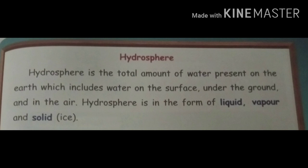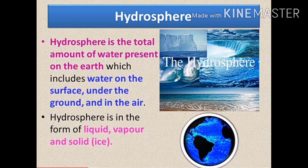What are the different forms available? Water on the surface, water under the ground, and water in the air. Hydrosphere exists in the form of liquid, vapor and solid. Solid means ice. Water exists as a liquid, vapor and solid — in the form of ice. That is, in the hydrosphere, water exists in three forms: liquid, vapor and solid.